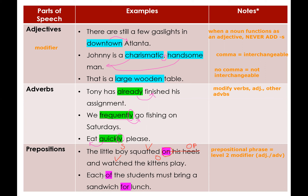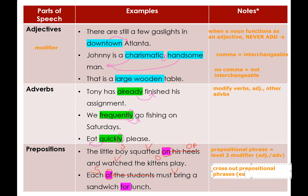In the second example, always cross out the prepositional phrase between your subject and verb, because you don't want to get a subject-verb agreement question wrong. Some students think 'students' is the subject, but it is part of the prepositional phrase. The actual subject is 'each,' an indefinite pronoun that is singular, and the verb is 'must bring.'